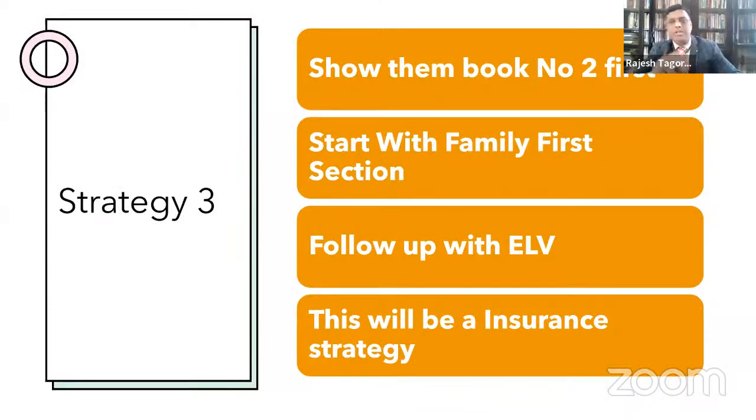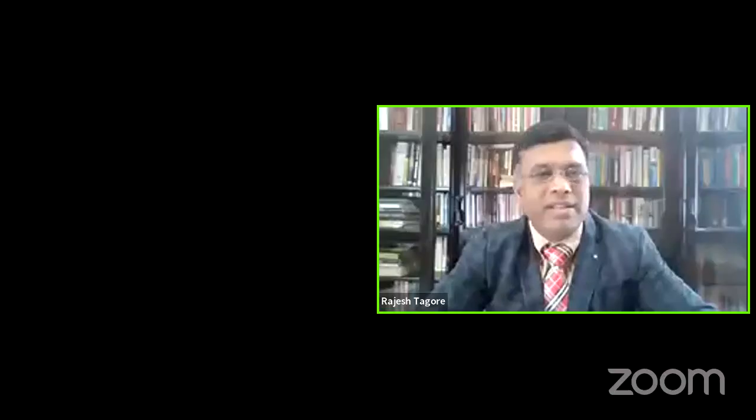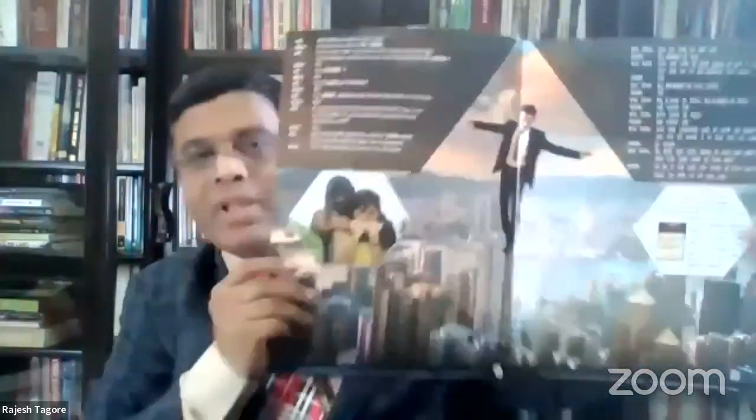Strategy number three: show them book number two first. Start with the family first section, follow up with the ELV section — this is an insurance strategy. Show the family first section, the Hiram Smith seminar story, ask the 17 questions and write down the 17 answers. Then follow up with the ELV strategy and demonstration. This has a direct insurance sales connection. For any known customer — an acquaintance who knows you are an insurance agent — start with the family first section.